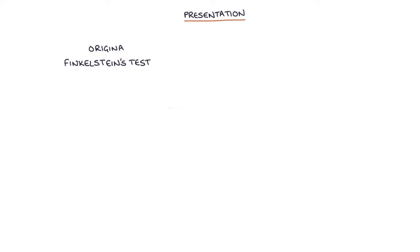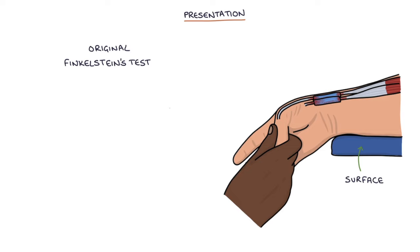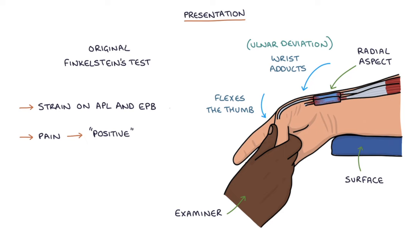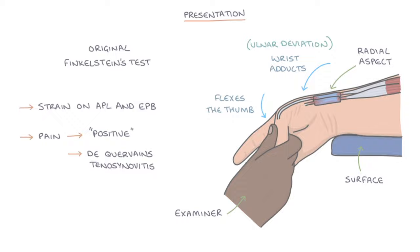The original Finkelstein's test involves the patient resting their forearm on a surface in a neutral position, with the wrist hanging off the surface and unsupported. The examiner holds the patient's thumb and passively flexes the thumb into the palm of the hand, causing the wrist to adduct with ulnar deviation, putting strain on the APL and the EPB tendons. If this causes pain at the radial aspect of the wrist, the test is positive, indicating De Quervain's tenosynovitis.